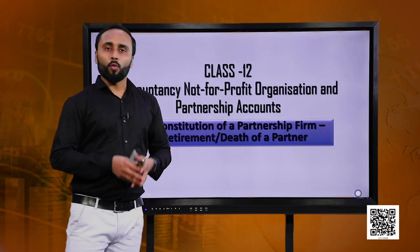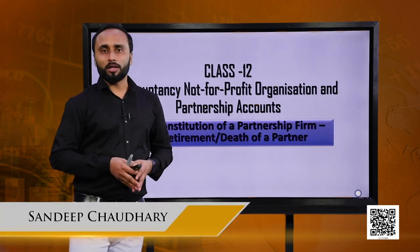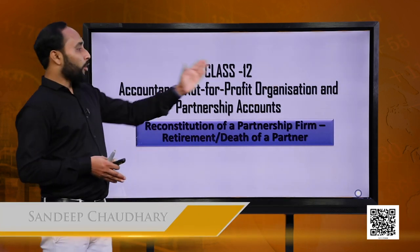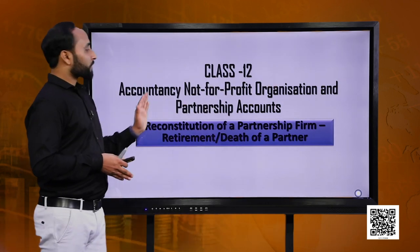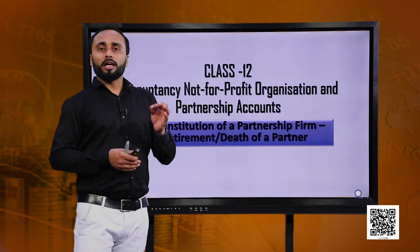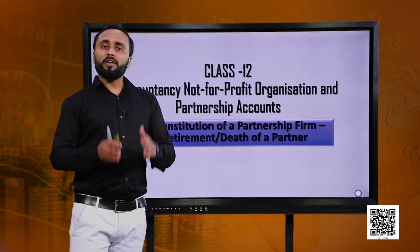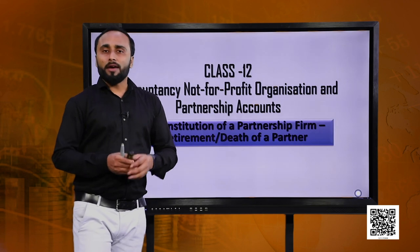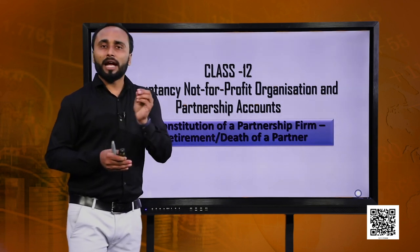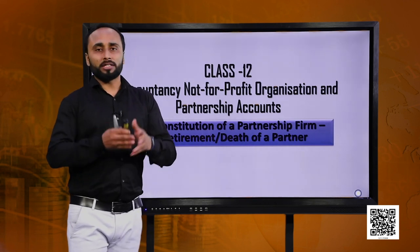Hello students, welcome to the third part of our lectures on Chapter 4 of Accountancy for Non-Profit Organizations and Partnership Accounts. In this chapter, we are discussing retirement or death of a partner. In the previous parts, we have seen the basic details that need treatment in the accounting books when a partner gets retired.